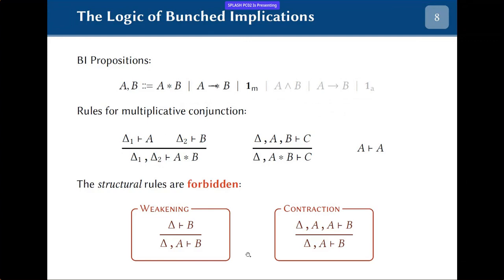The fact that we are forbidding these rules justifies why the rule is written this way: when I need to prove a conjunction, I actually need to partition the hypotheses delta_1 and delta_2 into two different disjoint sets for the two sub-proofs. If I were able to use weakening and contraction, this would not be a restriction, but since I cannot duplicate or discard hypotheses, this becomes a real restriction.